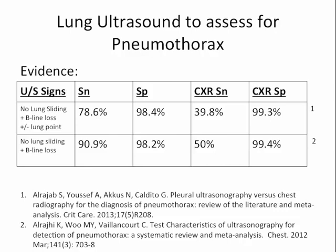The best strategy to assess a patient for pneumothorax is probably to use a combination of signs, as shown in a couple of meta-analyses. The first meta-analysis used loss of lung sliding plus B-line loss, plus or minus the presence of a lung point, and found a sensitivity of 78.6% and a specificity of 98.4%. Another study looking at loss of lung sliding plus loss of B lines found a sensitivity of 90.9% and a specificity of 98.2%, which compares quite favourably to chest x-rays.